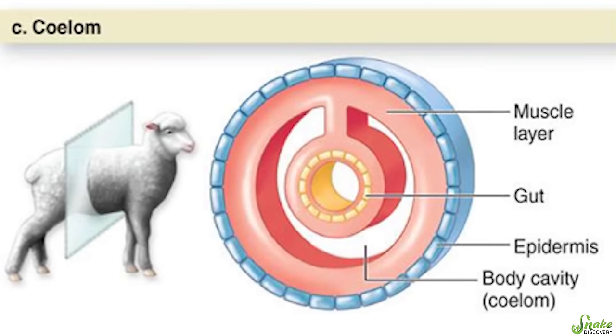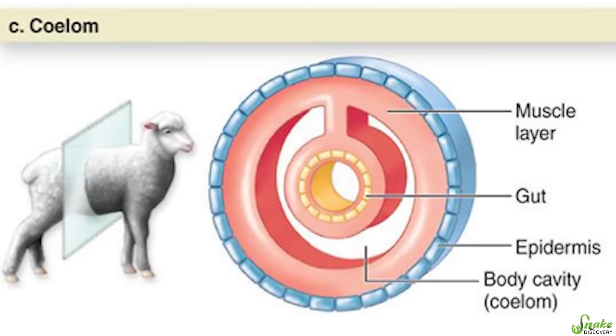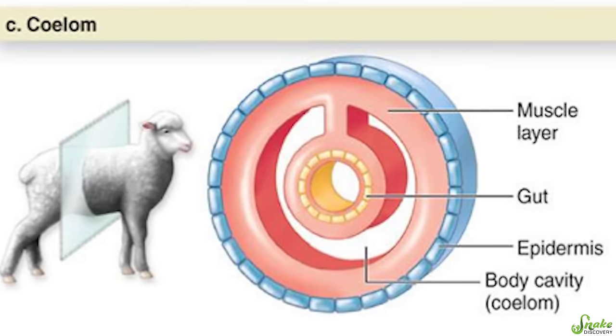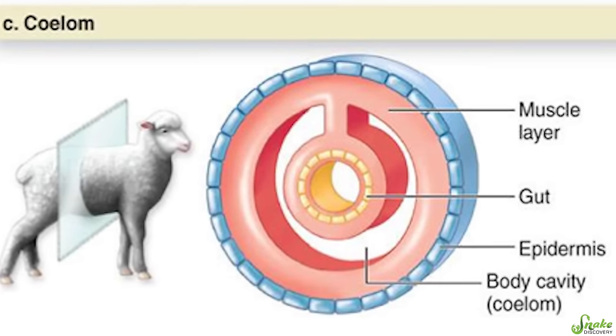Let's start with the coelum. The coelum is the main body cavity in animals. It's a fluid-filled sack where the organs develop, and the fluid helps provide a shock barrier to the organs inside, protecting them from quick movements and allowing them to wiggle around a little bit. It just gives them a little bit of insulation basically.